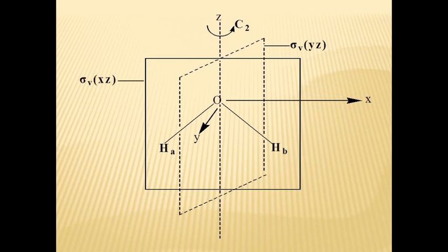The C2 proper rotational axis changes the positions of A and B. σV(XZ) does not change any position. σV(YZ) reflects HA to the place of HB and HB to the place of HA.